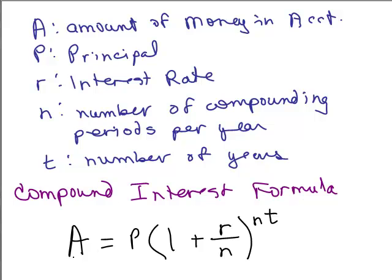Then we have what's called the Compound Interest Formula: A equals P times the quantity 1 plus R over N, raised to the NT power. R over N is the rate divided by the number of periods in a year. In our example, with a 12% interest rate compounded four times a year, 0.12 divided by 4 means you're getting 3% every quarter. NT represents how many total compounding iterations occur — in our problem, T was one year and N was four, giving four total computations. If you subtract P from A, you get the actual interest earned; keep in mind this formula gives the total amount in the account, not just the interest.